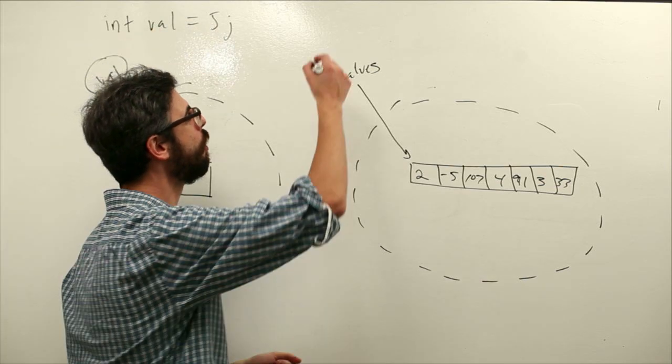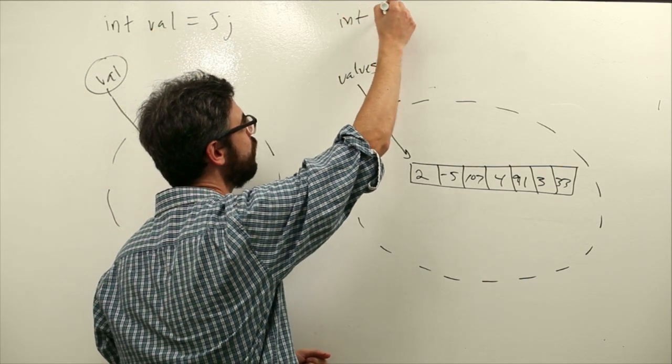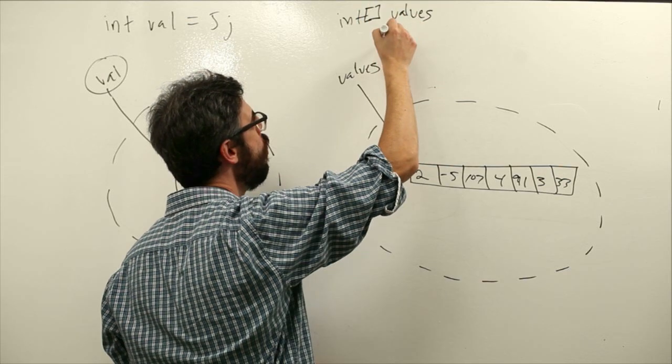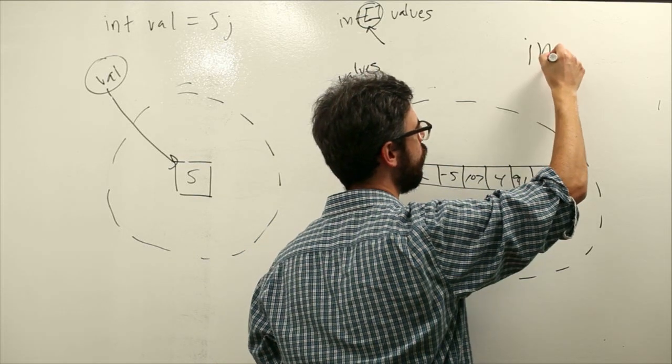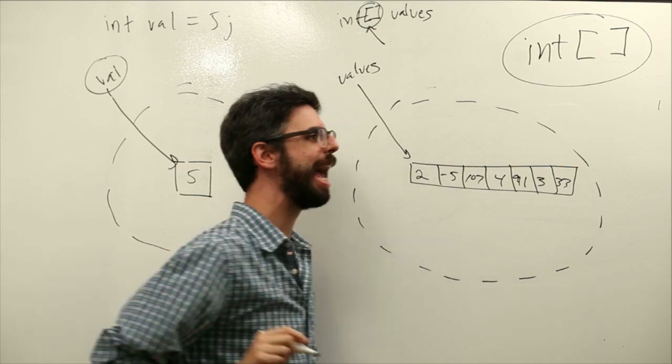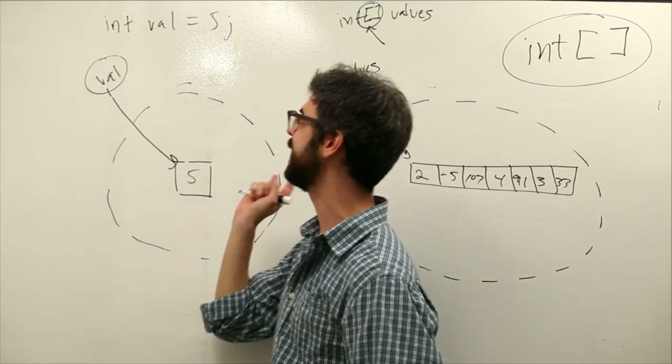What we need to do is declare values as a list of integers. Open square bracket, close square bracket. This is how we note an array in a declaration.